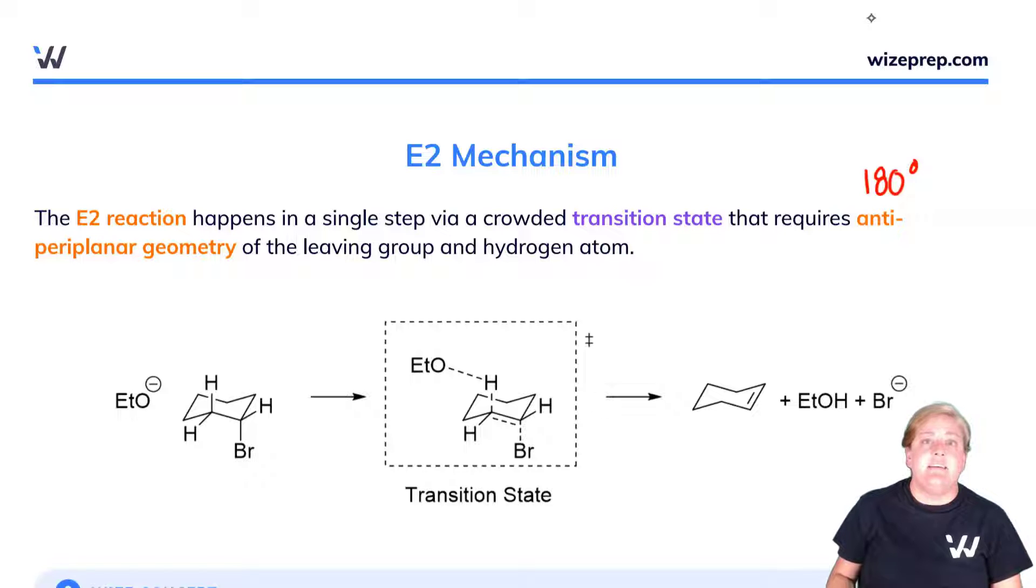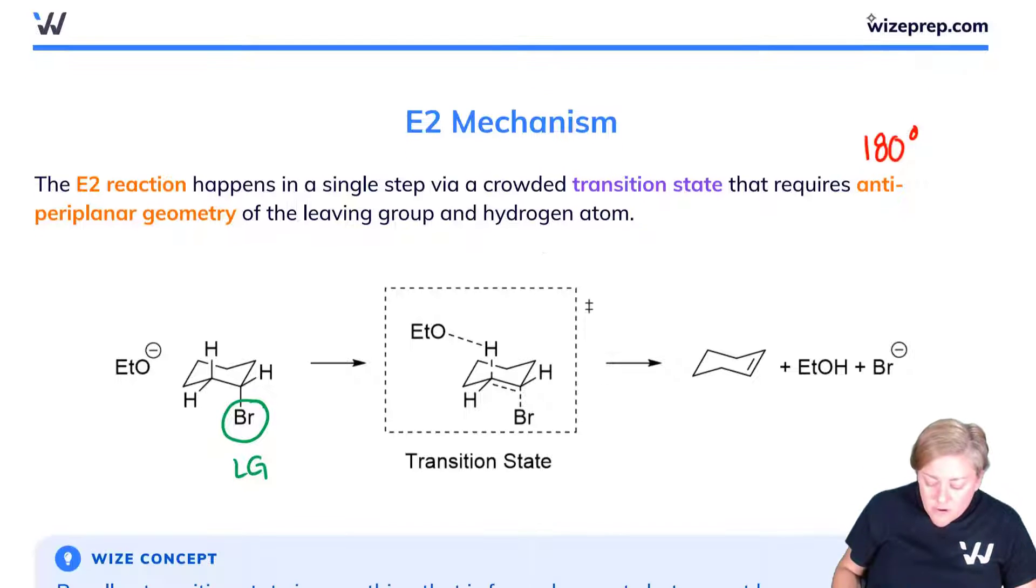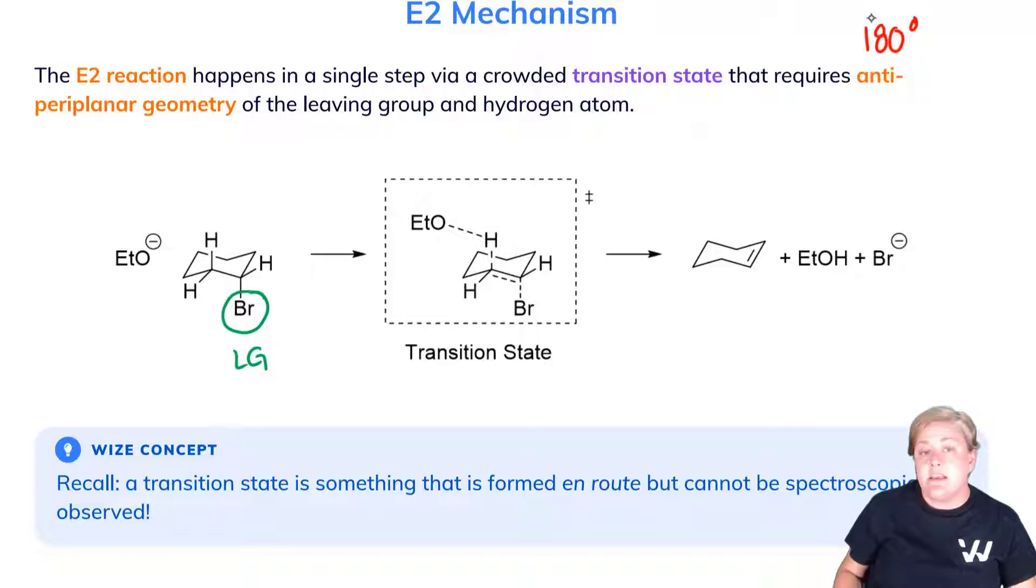You'll notice that you've been provided a chair conformation. Let's first identify the leaving group. That will be this bromine atom here. Now I know that I want to undergo the E2 reaction because I have a strong base. That's this ETO- or the ethoxide.